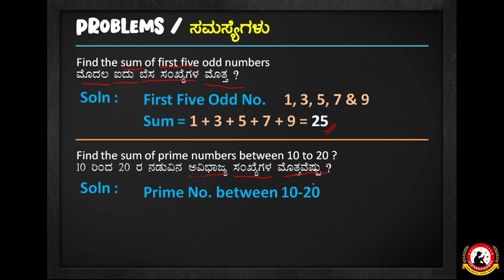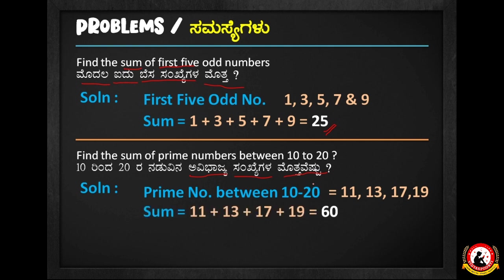Let us ask: what are the prime numbers between 10 and 20? If you recall, the prime numbers between 10 and 20 are 11, 13, 17, and 19. Very good! The sum of these prime numbers between 10 and 20 is 60.